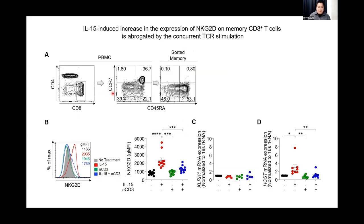We sorted memory CD8 T-cells by sorting CCR7-negative CD8 T-cells and stimulating the cells with IL-15 and anti-CD3, or in combination. We were able to reconfirm that NKG2D expression is significantly increased by IL-15 stimulation. However, TCR stimulation didn't increase NKG2D expression. In the case of combined stimulation, it rather decreased the IL-15-induced expression of NKG2D. This surface expression of NKG2D was not correlated with its own gene KLRK1, but was nicely correlated with the gene of NKG2D's adaptor molecule DAP10. From these data, we were able to see that increase in the surface expression of NKG2D and mRNA expression of DAP10 can work as markers indicative of TCR-independent IL-15-induced activation in memory CD8 T-cells.